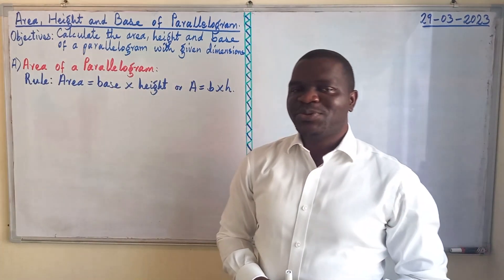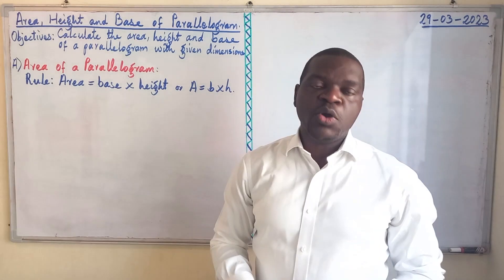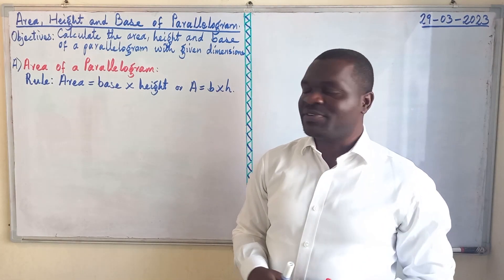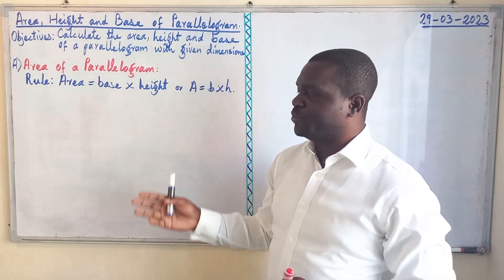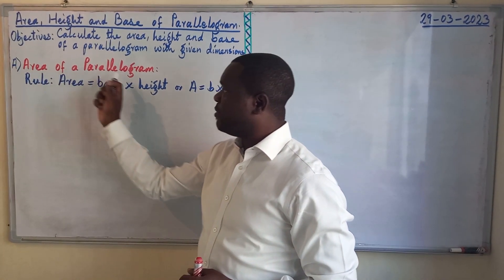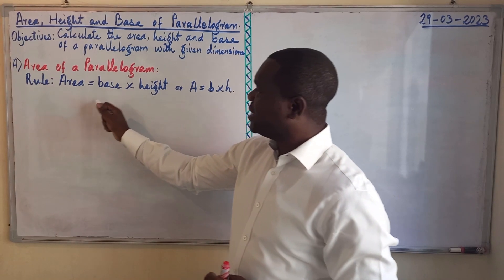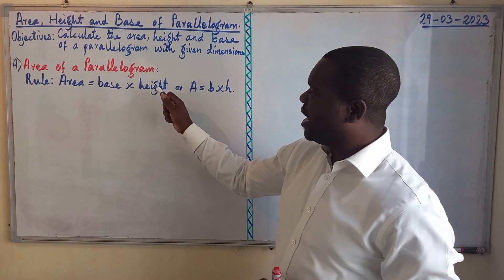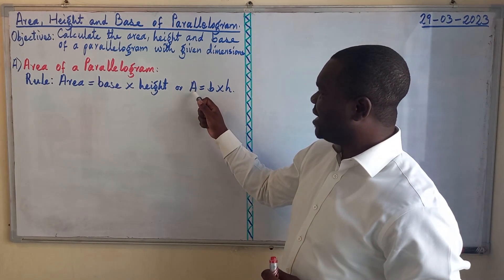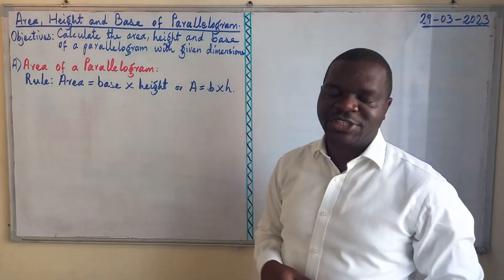As we mentioned last time, when you have a shape, what guides you into finding the different aspects of it is the rule. So in our first aspect, which is the area of a parallelogram, the area can be calculated as base times height, or in short, A = B × H.